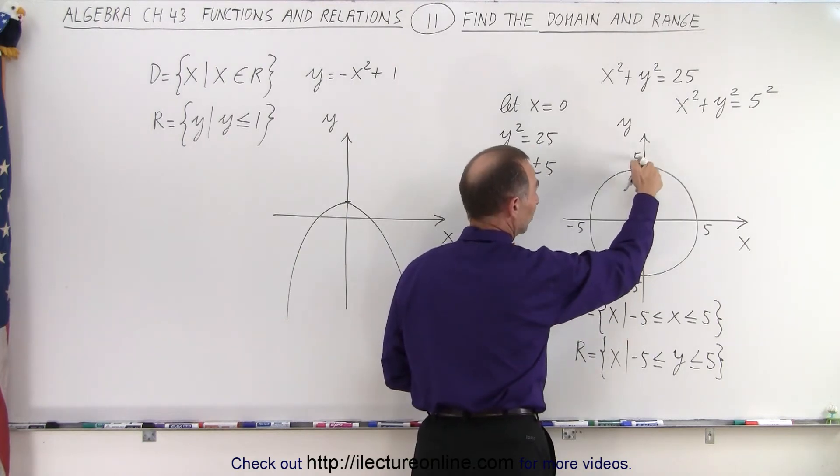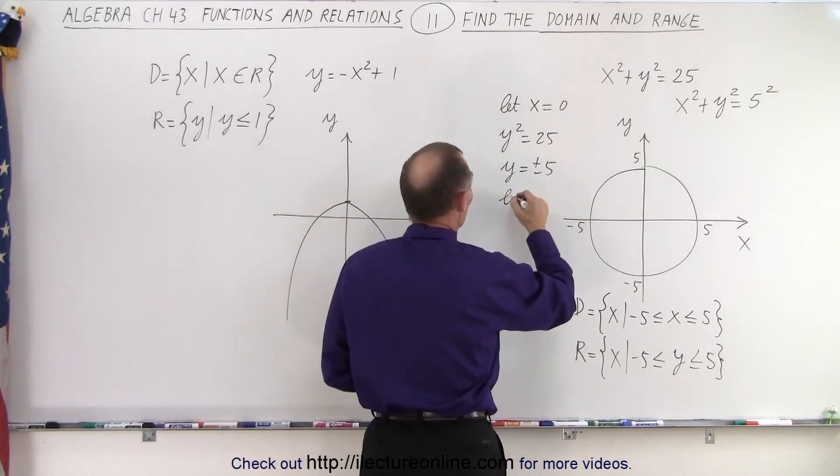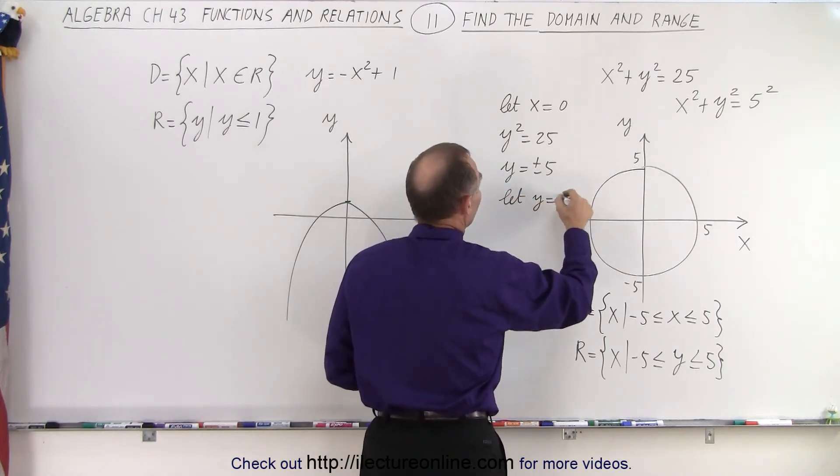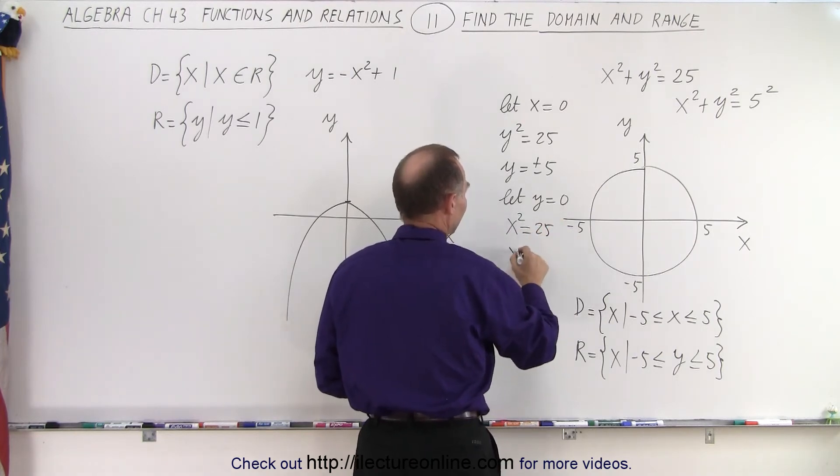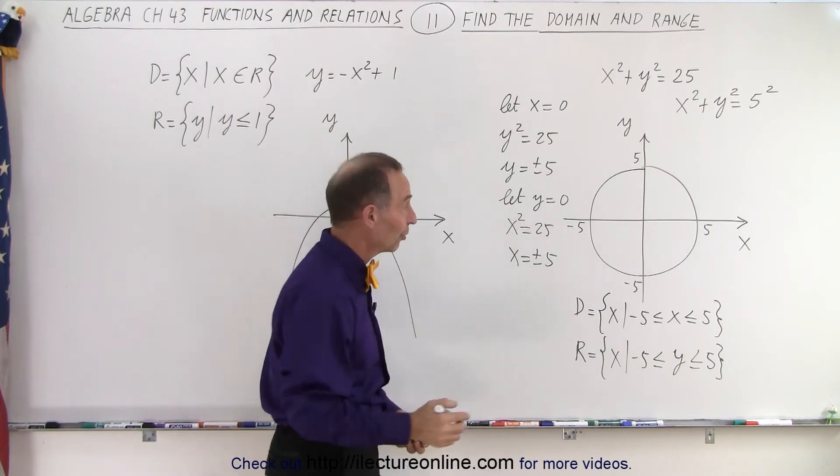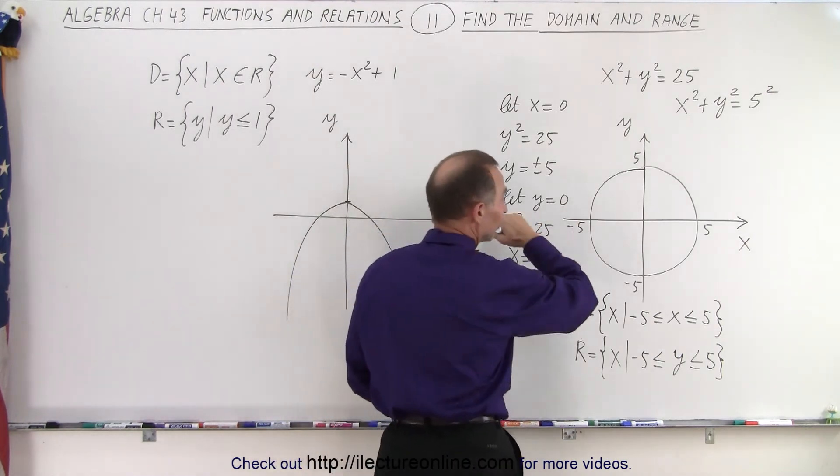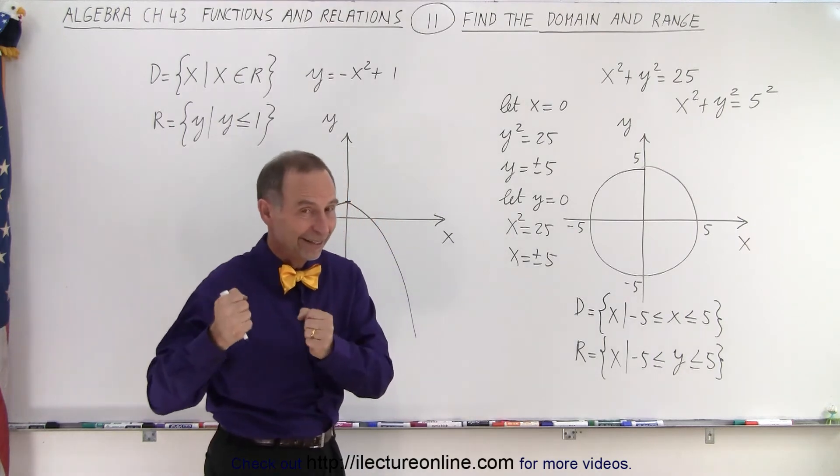And then you do the same thing for let y equals zero and then you end up with x squared equals 25 and then x equals plus or minus 5 when you take the square root of both sides. And then, of course, when y equals zero, you're on the x axis, you get the plus or minus 5 and then you realize, ah, it's a circle.